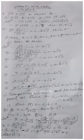Question number 2: if (√3 − 1)/(√3 + 1) = a − b√3, what will be the values of a and b? We will do the calculation to find a and b.